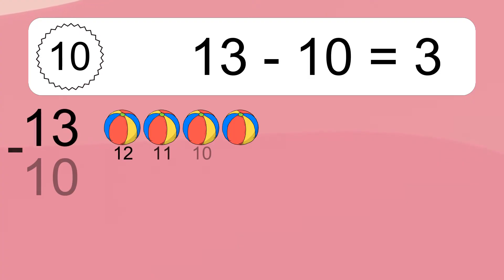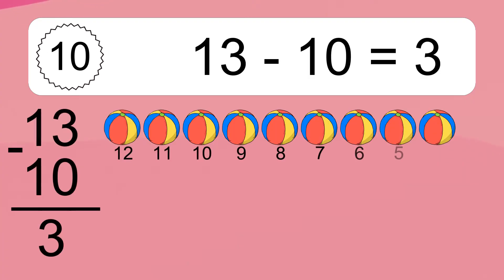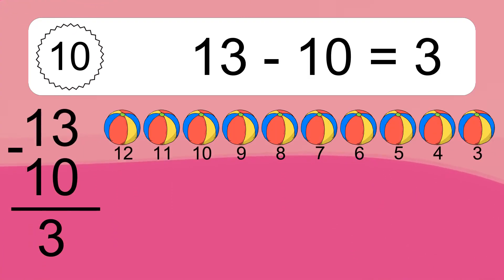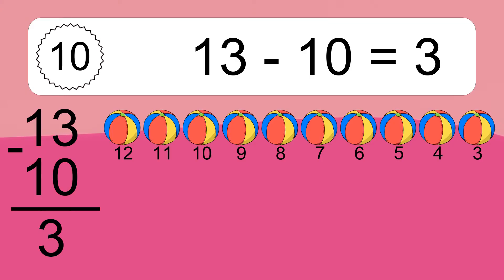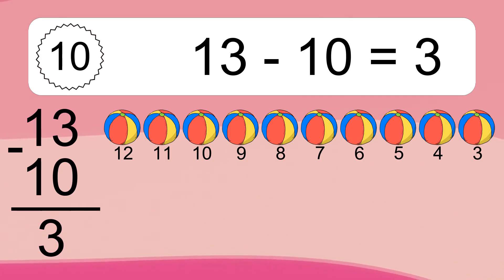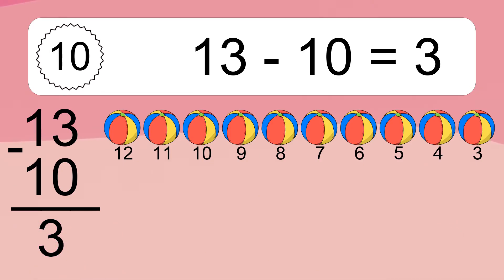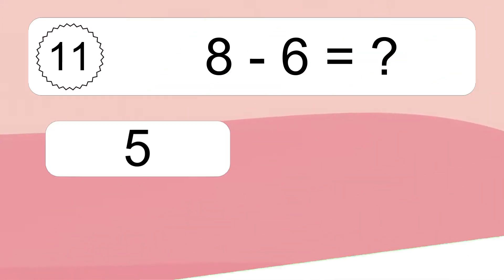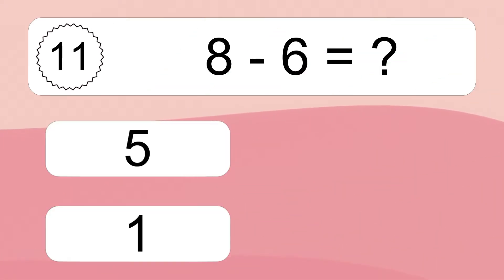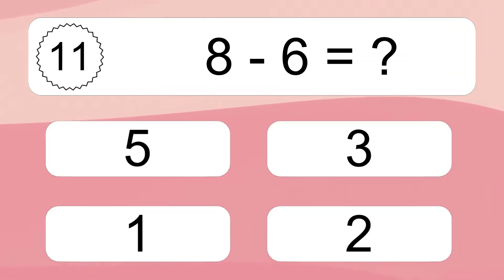13 minus 10 equals what? 13 minus 10 equals 3. Let's count it: 12, 11, 10, 9, 8, 7, 6, 5, 4, 3.